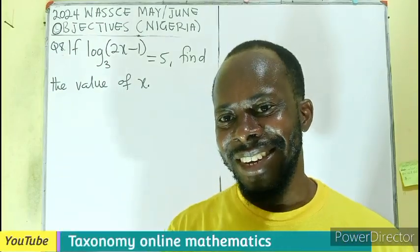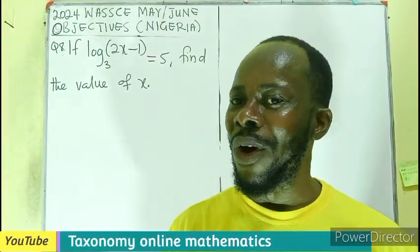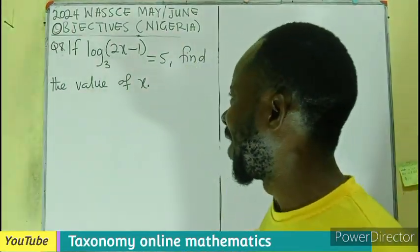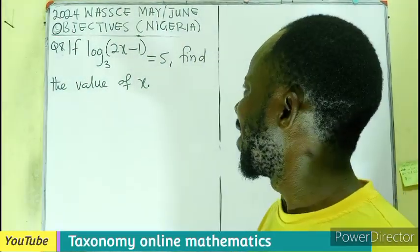Welcome. Question 8. This is for you. On logarithm, we have to find a value of x if log base 3 of 2x minus 1 equals 5.